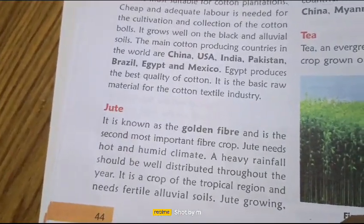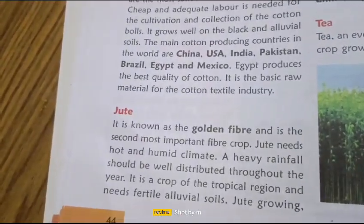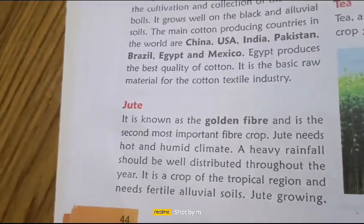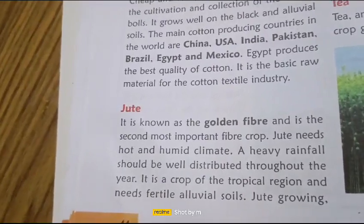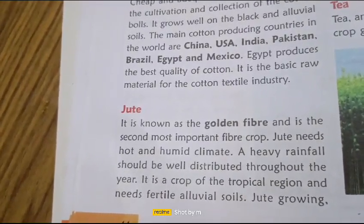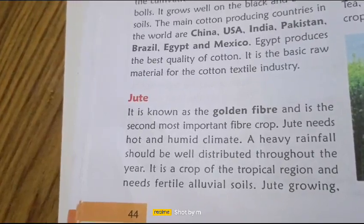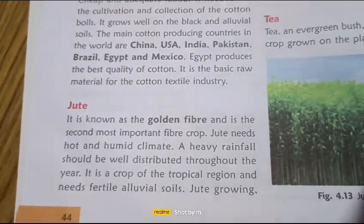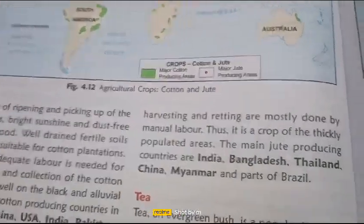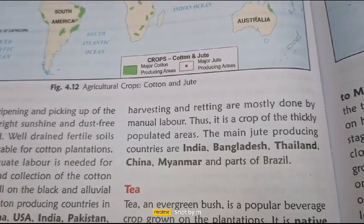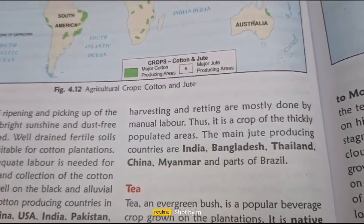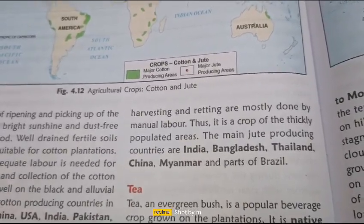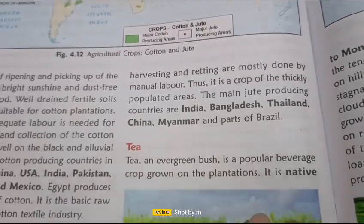Jute is known as the golden fiber and is the second most important fiber crop. It requires a hot, humid climate, so it is grown in India and Bangladesh. Heavy rainfall, well distributed throughout the year, is very helpful. It is a crop of the tropical region and needs fertile alluvial soil. Jute growing and harvesting are mostly done manually, thus it is a crop of thickly populated areas. The main jute-producing countries are India, Bangladesh, Thailand, China, Myanmar, and parts of Brazil.